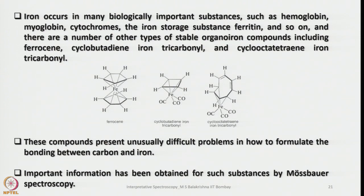There are a number of stable organo-iron or organometallic compounds also known — as simple as ferrocene, cyclobutadiene iron tricarbonyl, or cyclooctatetraene iron tricarbonyl — because Fe(CO)₅ is an 18-electron species with iron in the zero-valent state. In ferrocene, iron is in the +2 state, also an 18-electron species. These compounds present unusually difficult problems in formulating the bonding between carbon and iron, but important information has been obtained for these substances by Mössbauer spectroscopy.